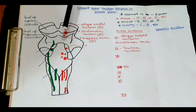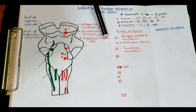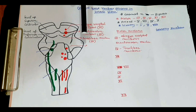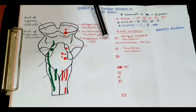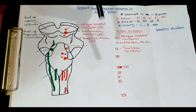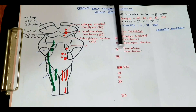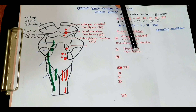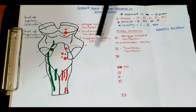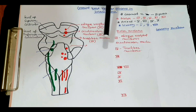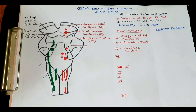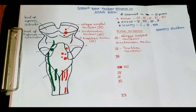At the level of the inferior colliculus, there is another nucleus which is the motor nucleus of the fourth cranial nerve. It is called the trochlear nucleus. The fourth cranial nerve has only one motor nucleus, which is the trochlear nucleus.